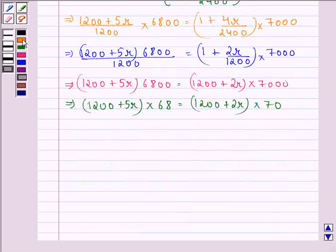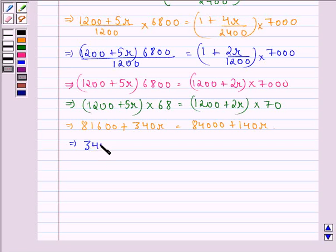This implies 81600 + 340R equals 84000 + 140R. Therefore, 340R minus 140R equals 84000 minus 81600, which gives us 200R equals 2400.